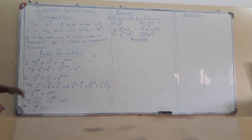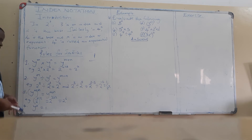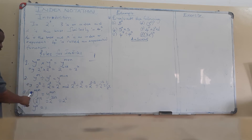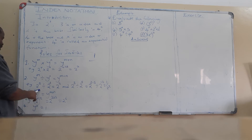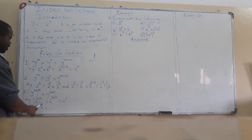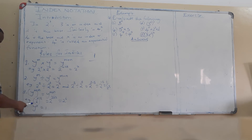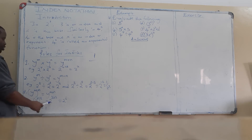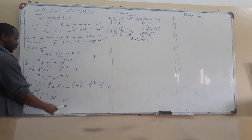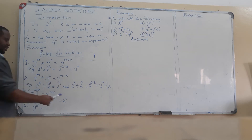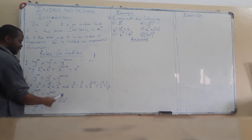Now, if you have double powers, you simply multiply the powers. So y to the power m, in brackets to the power n, gives y to the power m times n. For example, 2 to the power 3, in brackets to the power 2: you do 3 times 2, which is 6, so 2 to the power 6 is your answer.